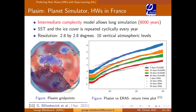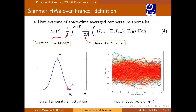The definition we'll use for a heat wave: we take the area of interest — in this case France — compute the two-meter temperature anomaly, and then integrate in time with a 14-day running mean. We're looking at the extreme tail of this distribution. We use the Planet Simulator, an intermediate-complexity climate model, with a resolution of about three degrees — roughly 100 km — which allows us to simulate 8,000 years, giving a lot of statistics.